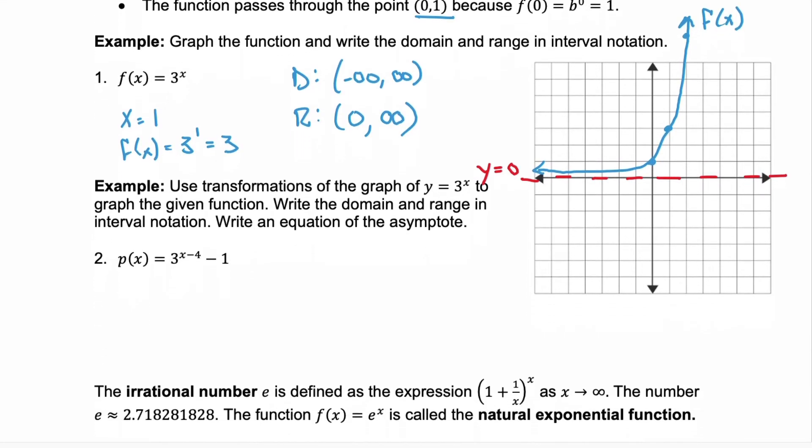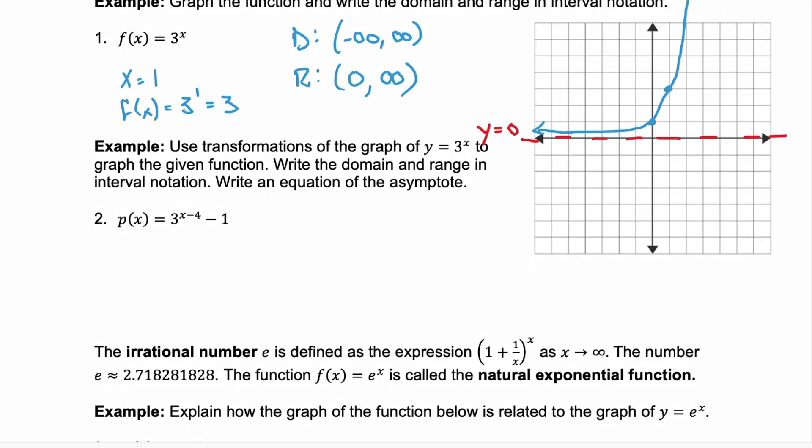Now in example 2, we're going to use transformations of the graph we just drew, 3^x, to help us graph the next function p(x). And then we need to determine its domain and range, as well as the equation for any asymptote. We need to remember what our transformations are and complete those in order. First, we're looking for any horizontal shifts. Well, that would be this, the -4. So we need to go right 4 units.